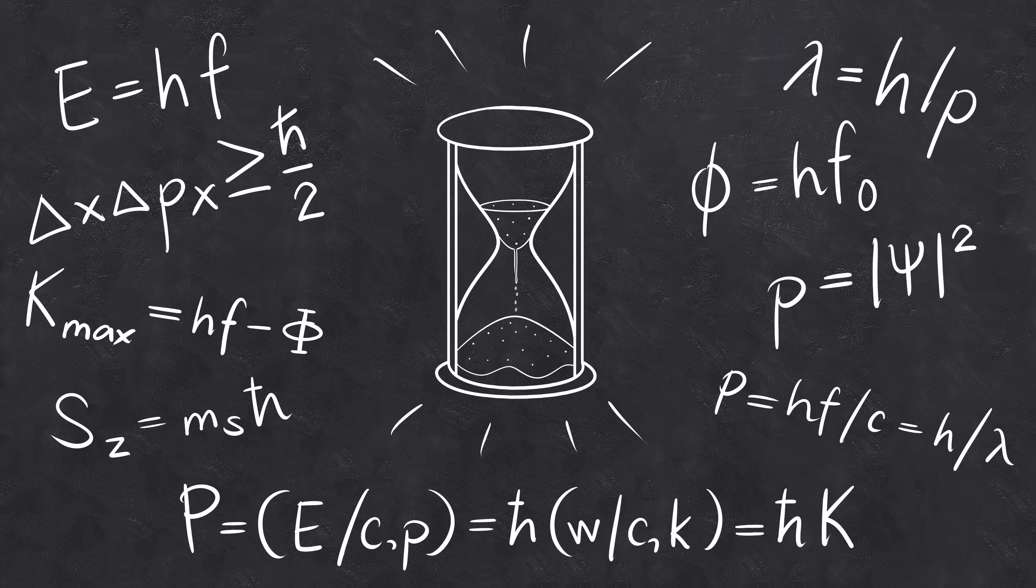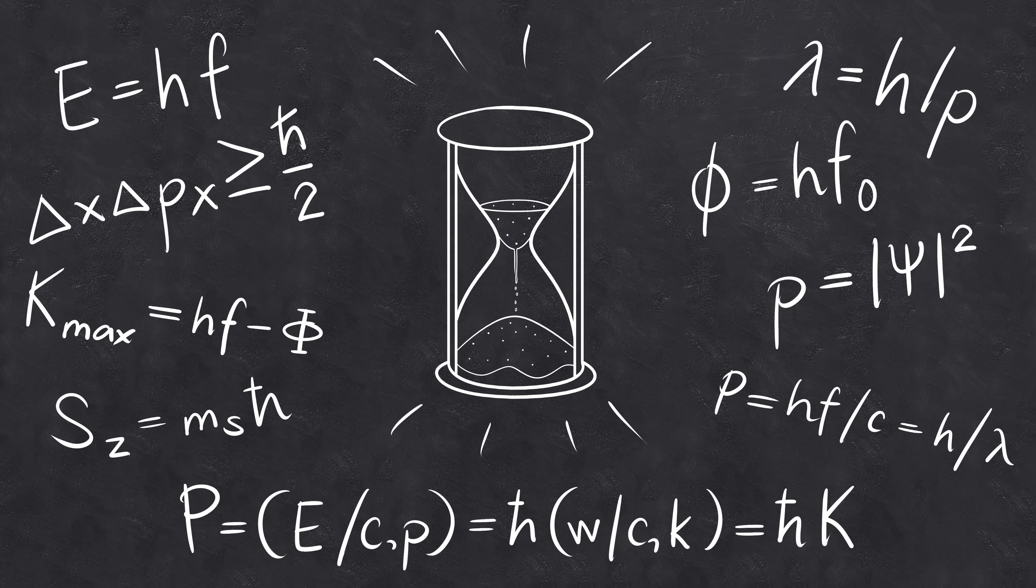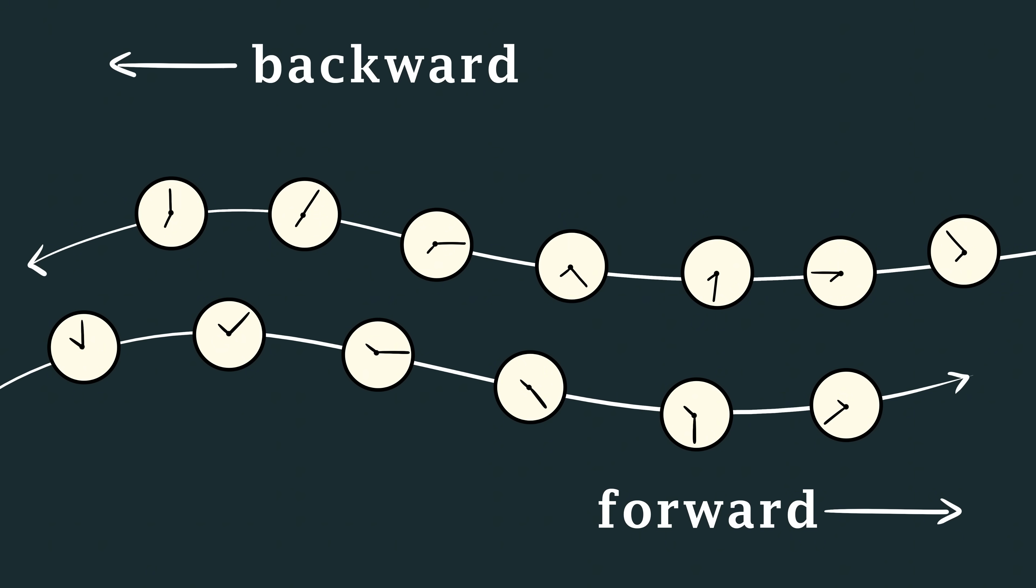Some equations in quantum mechanics, the rules that describe the tiniest particles, don't include time at all, and the math still works perfectly fine without it. So maybe time isn't a fundamental part of the universe, but something that emerges from deeper physical laws we don't yet understand. Then there's the problem of direction. The laws of physics don't care which way time flows, they work the same backward or forward.